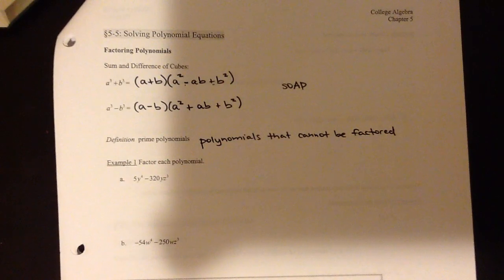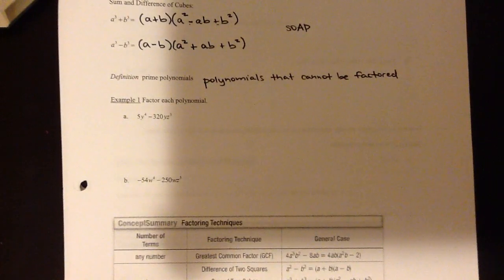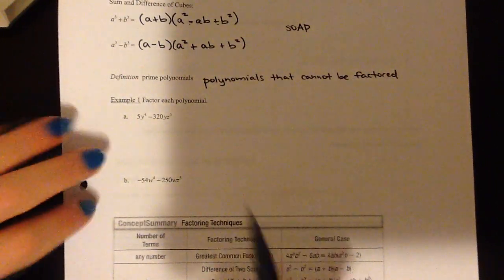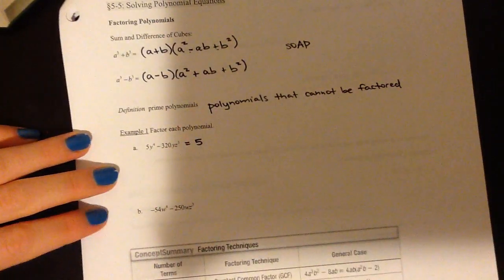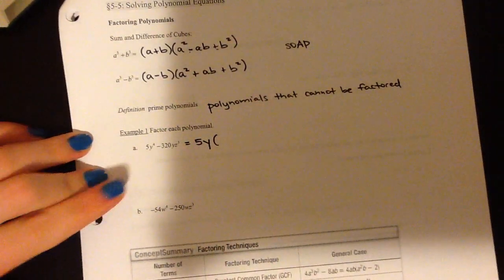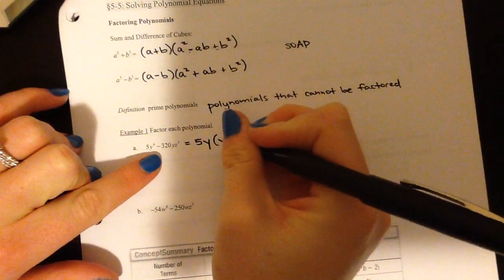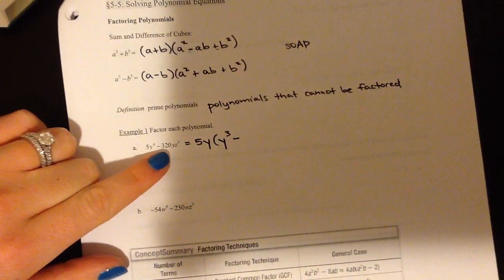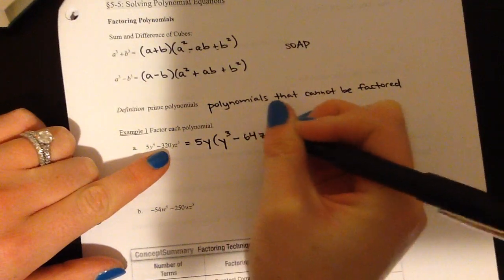In this first example, we're going to get a little bit of practice factoring. For part A, the first thing we're going to do is look for GCFs. Every single time that you factor, you want to start off by looking for a GCF. Looking between these two terms, they definitely both have a 5, so we're going to be able to factor a 5 out. They both have a single copy of y that we can factor out. When we factor out a 5y, we are left with three copies of y — a y cubed — and then minus, when we divide 320y by y, we'll be left with 64 and then there is a z cubed.